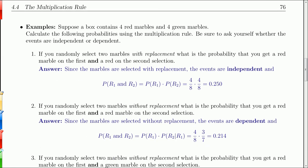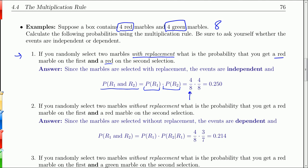We have our box of marbles — eight marbles total, four red and four green. If you select two marbles with replacement, what's the probability of red on the first and red on the second? Since these events are independent — the probability of getting red on the second doesn't depend on the first draw — we just multiply: four out of eight times four out of eight, which gives us 0.250.